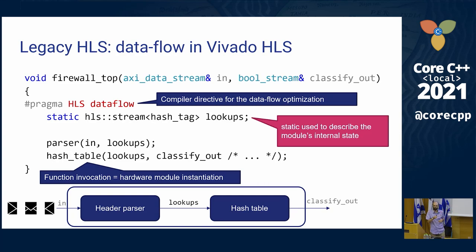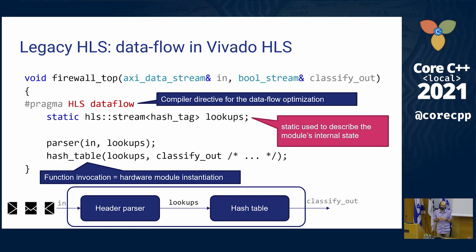Regarding the lookup stream: this line declares the lookup stream as a FIFO. Passing it to the parser connects the parser output to this FIFO stream, and passing it to the hash table connects it as an input. With the dataflow optimization, the FIFO must be used only in a single direction — the compiler detects if you try to read or write twice and outputs an error.